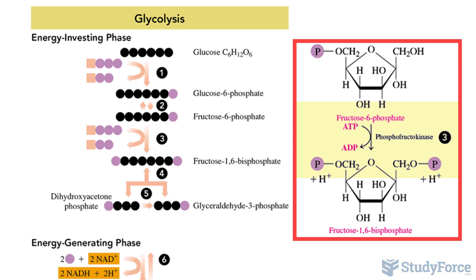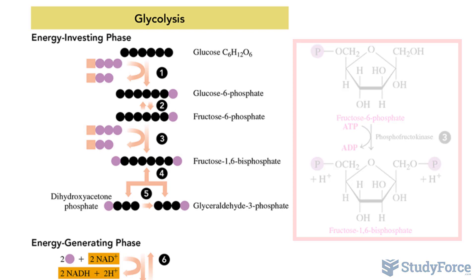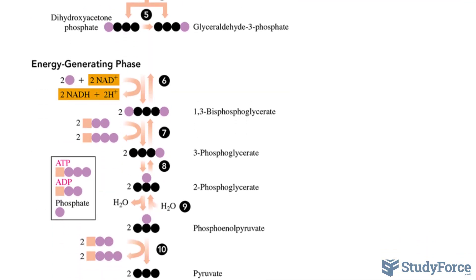This enzyme is inhibited by high levels of ATP and activated by high levels of ADP and AMP, an indication that energy needs to be replenished in the cell.